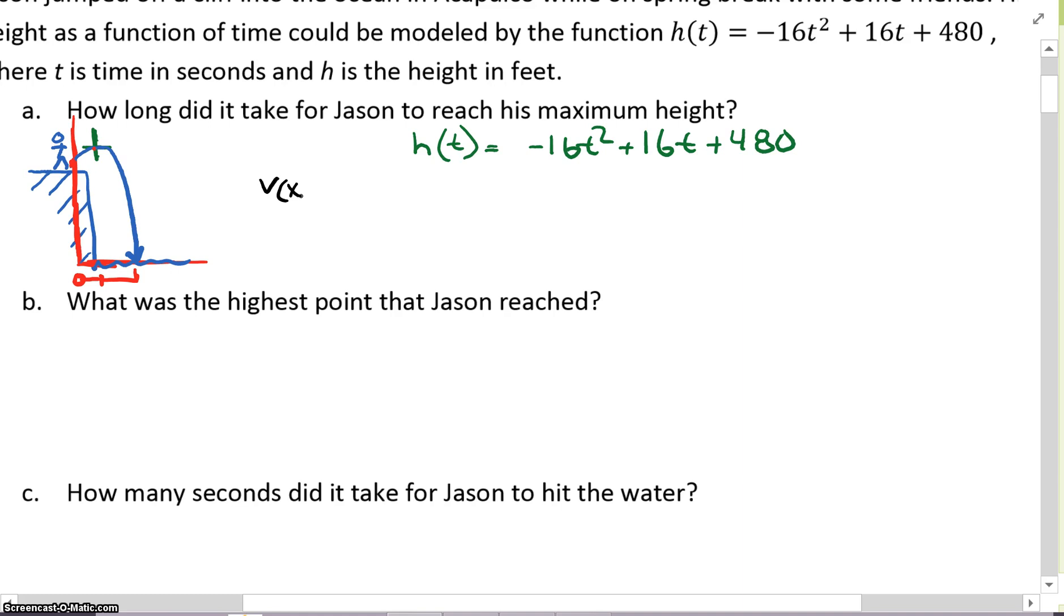Our x value of the vertex here is -b over 2a, which would be -16 over 2 times -16. So my x value, which if you remember, my x value is time, is going to be 1/2, which is 0.5 seconds.